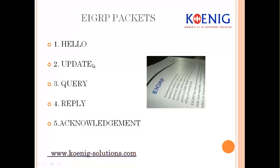Update is used to send routing updates about all the possible networks a router knows about. Query is sent when a primary link goes down and a router does not have a backup path — it asks neighbors: 'Do you have a backup path? I just lost my primary path.' Reply is the response to a query message. Acknowledgement is the acknowledgement of EIGRP packets.